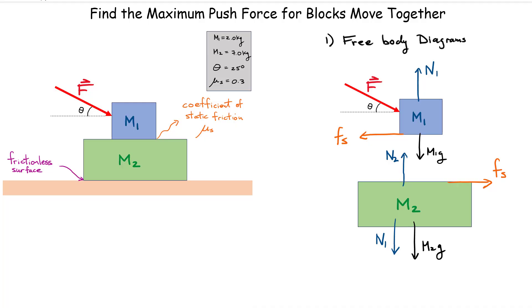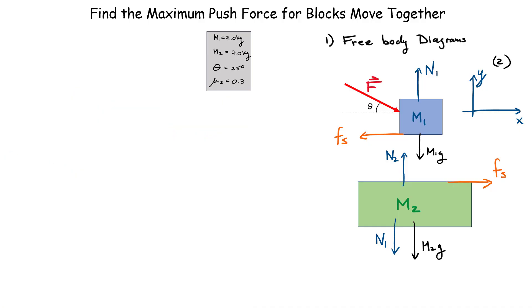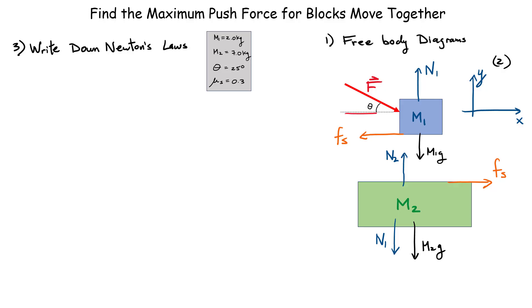Step two: pick a coordinate system. For this problem we use a standard coordinate system — everything pointing to the right is the positive x direction and everything pointing up is the positive y direction. Before writing Newton's laws, I want to resolve all forces into x and y components. The applied force F must be broken into two components: the horizontal component is F cosine θ (on the adjacent side), and the vertical component acting downward has magnitude F sine θ.